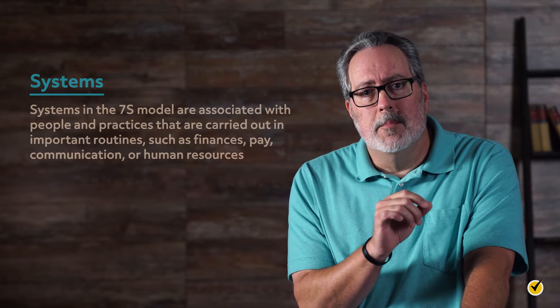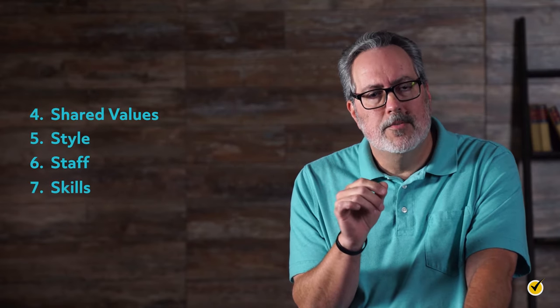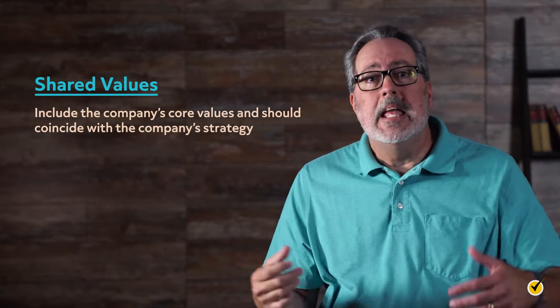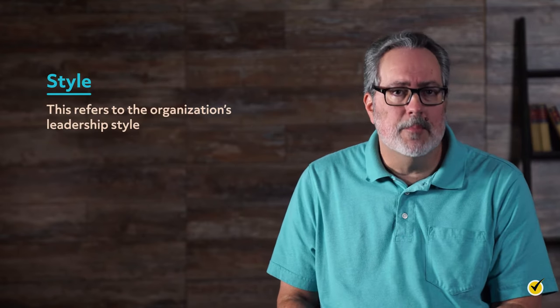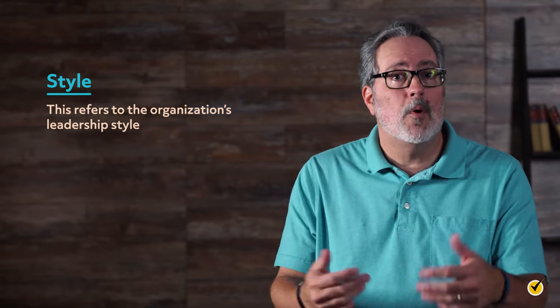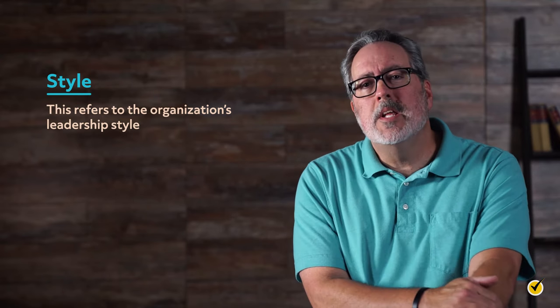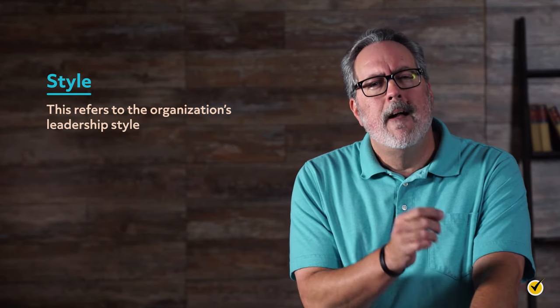Now let's review the soft elements: shared values, style, staff, and skills. Shared values include the company's core values and should coincide with the company's strategy. If so, these values can be detected through the organization's culture. Style refers to the organization's leadership style. Are employees empowered with laissez-faire leaders who seldom interfere with processes and encourage employees to be cross-functional? Or is the leadership team made up of autocratic leaders who dominate all actions and decisions?